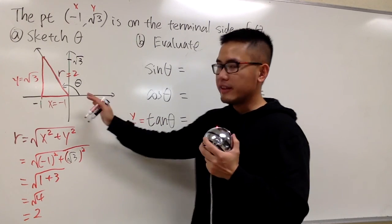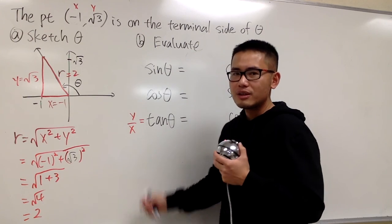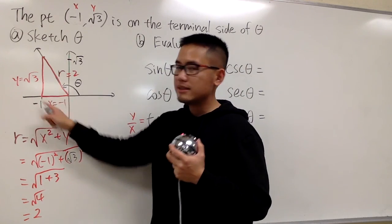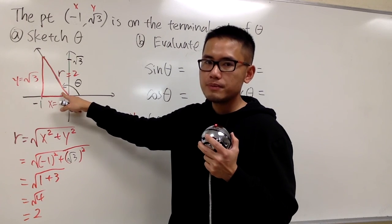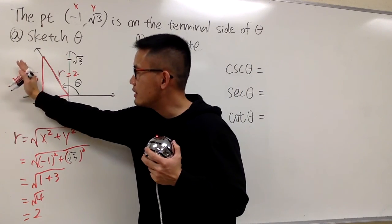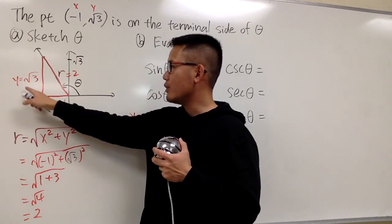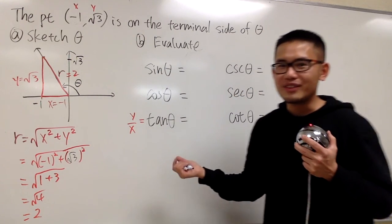And the connection between the picture and the y over x definition right here is that, you see, if you look at this as the right triangle, if you look at this as what we call the reference angle, tangent is the opposite over adjacent. It is still y over x, just like the usual definition of tangent.